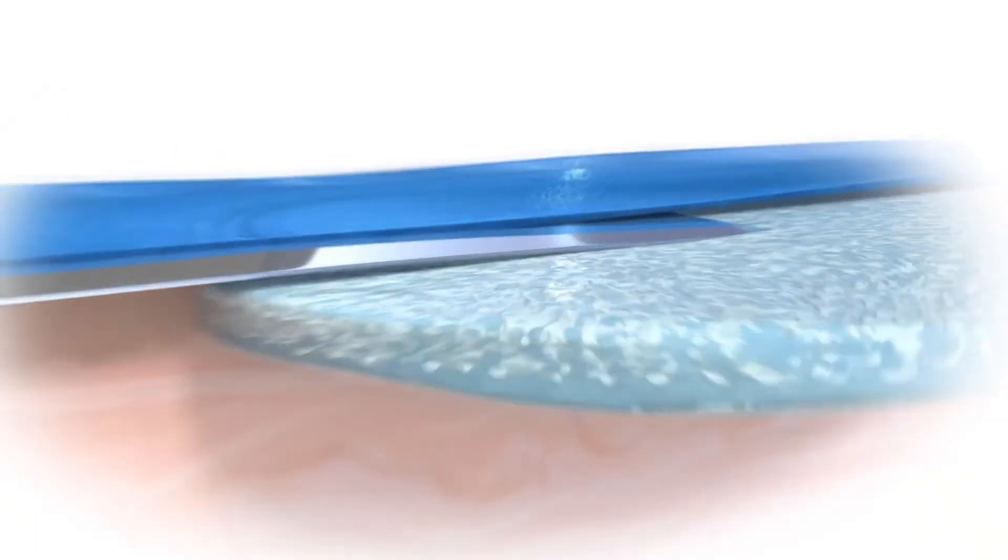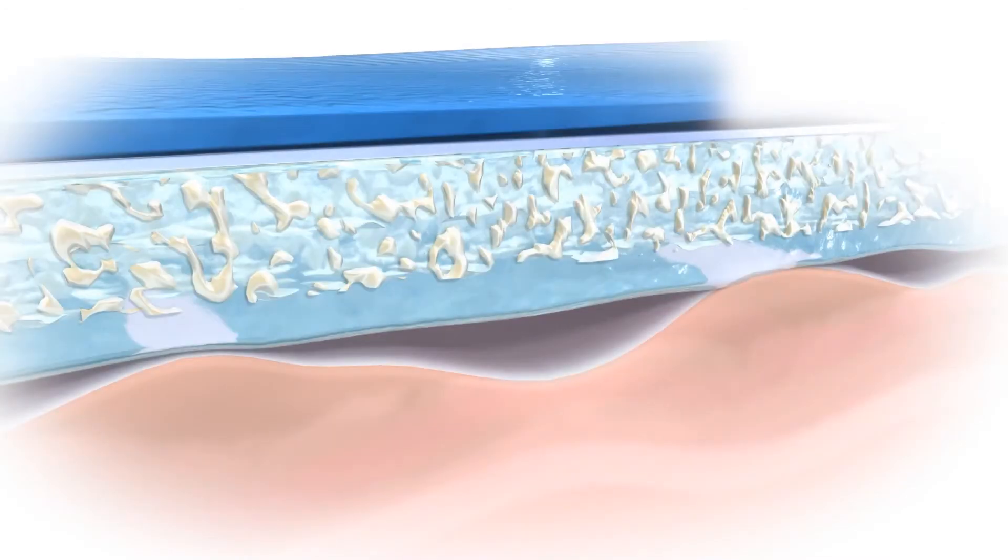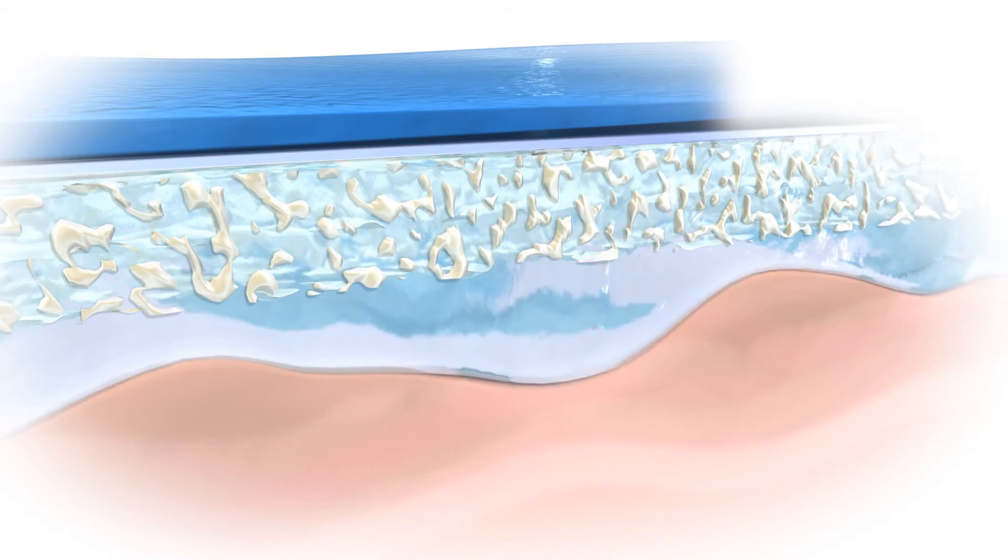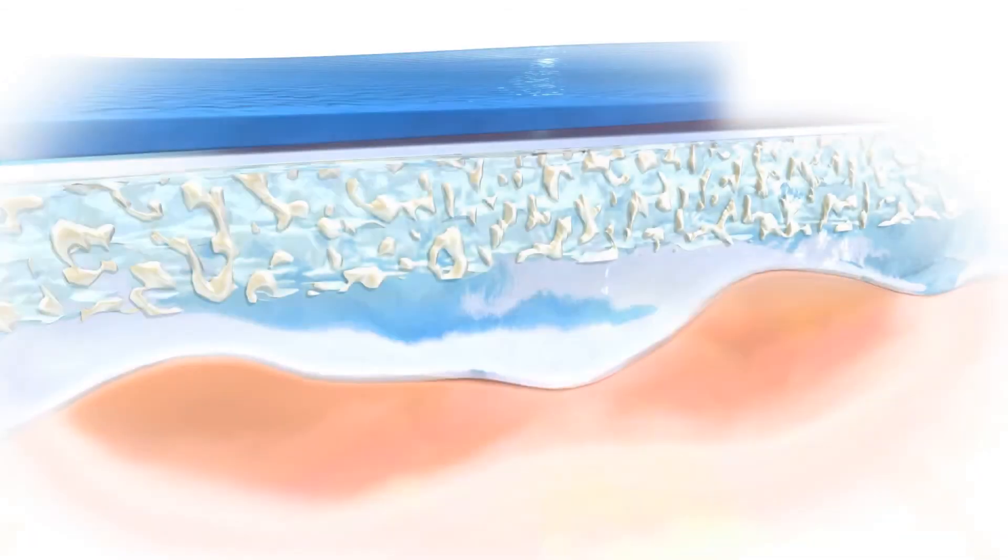Skin impedance is the resistance to conduction of electrical current through the skin. The gel on the underside of the electrode reduces the skin impedance by establishing a close contact between skin and electrode.